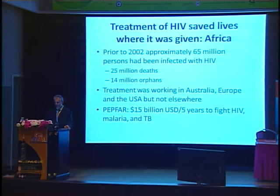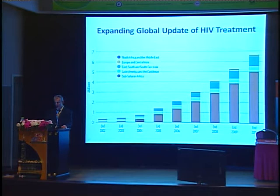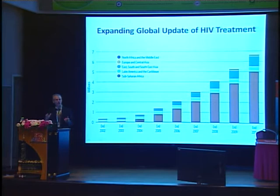So the Global Fund devoted money to treatment, and the United States put in $15 billion over five years to fight HIV, malaria, and tuberculosis, with about half of it going into HIV testing and treatment. $15 billion over five years — it's really not that much money when you consider what was going on. And if you look in the years after these programs were started, look at what happened in sub-Saharan Africa — a 16-fold increase in antiretroviral therapy use in Africa, directly attributed to these programs.